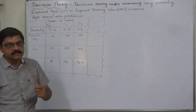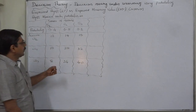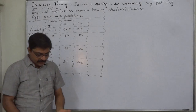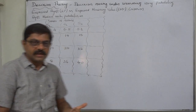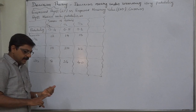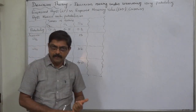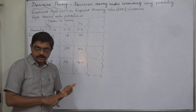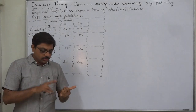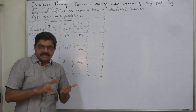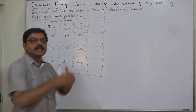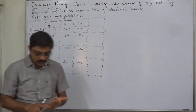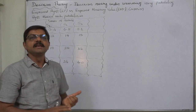The question is: how can we obtain such probabilities? The probabilities of each and every state of nature can be made available through past records, through the past experiences of others who have faced the same kind of situation, or on the basis of surveys.